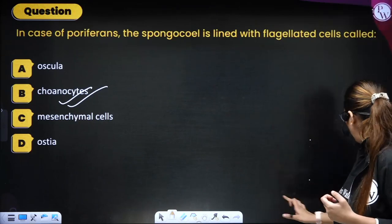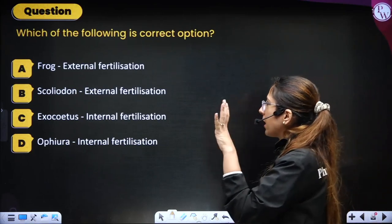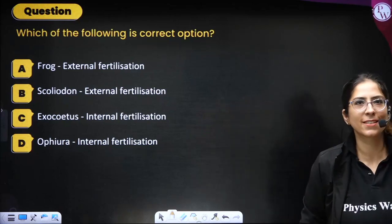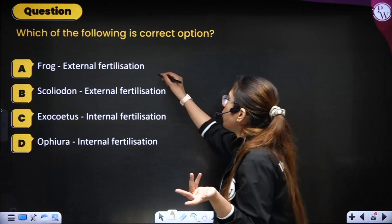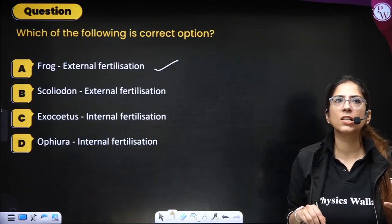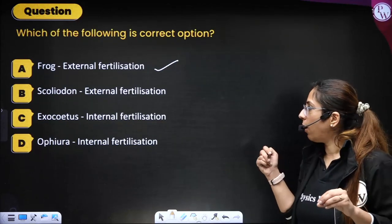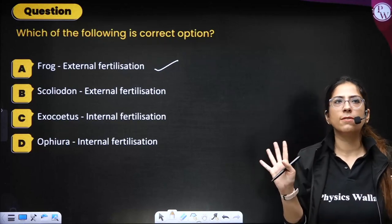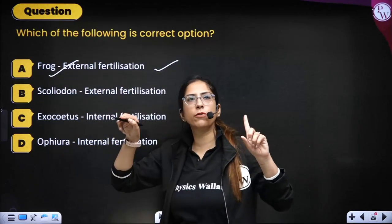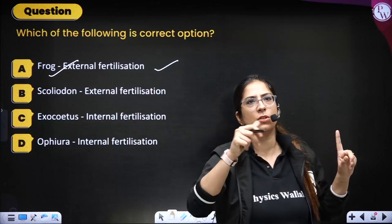Next question: which of the following is a correct option? Frog shows external fertilization — yes, this is right. Scoliodon shows external fertilization — no, they show internal fertilization. Exocoetus shows external fertilization — yes. Ophiura (brittle star) shows internal fertilization — no, external fertilization. Frogs always show external fertilization — this is asked many times. Correct option is A.